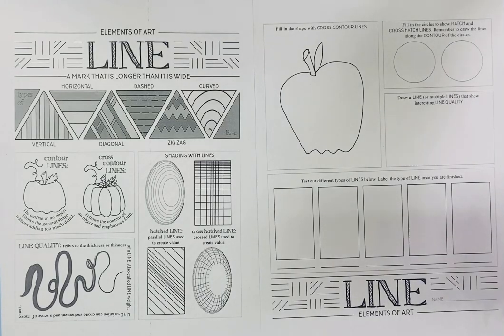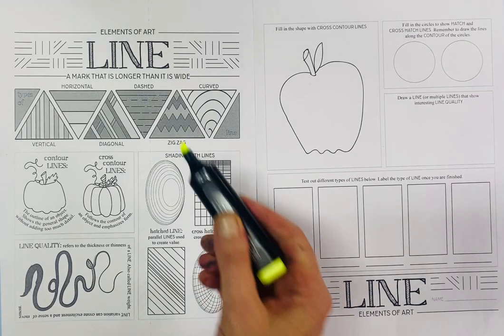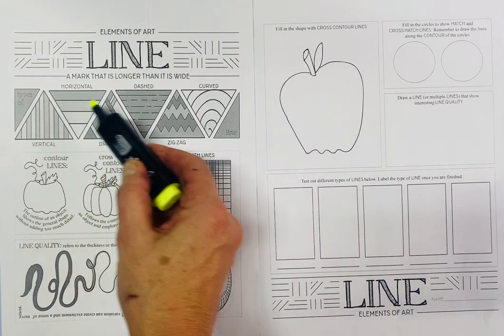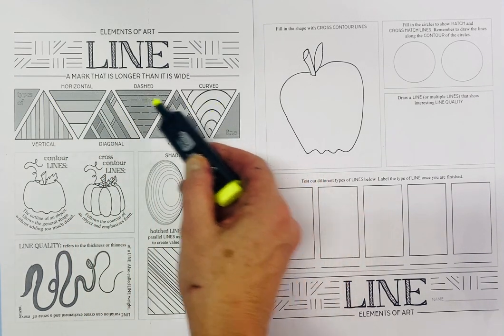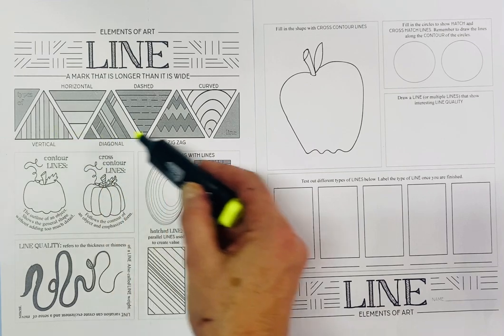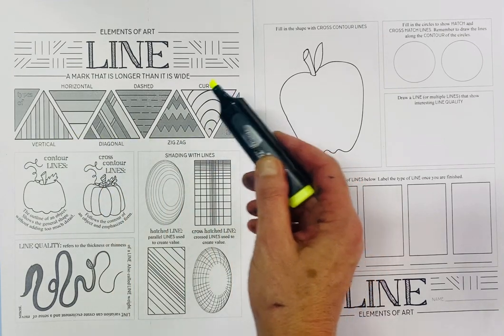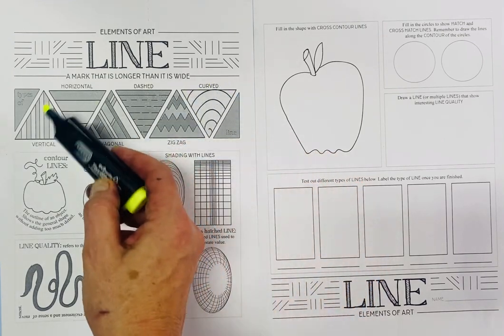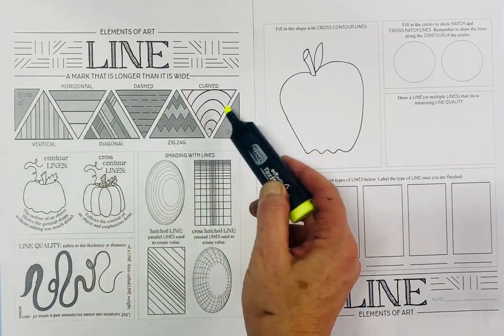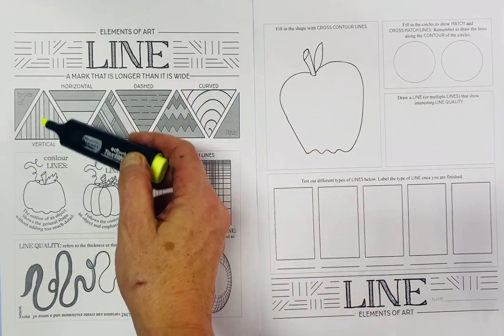Good morning! Here we go, starting with our first element of art: line. It's probably a good idea for you to go and look at the color version of this in the classroom stream. We've got some different types of line here.